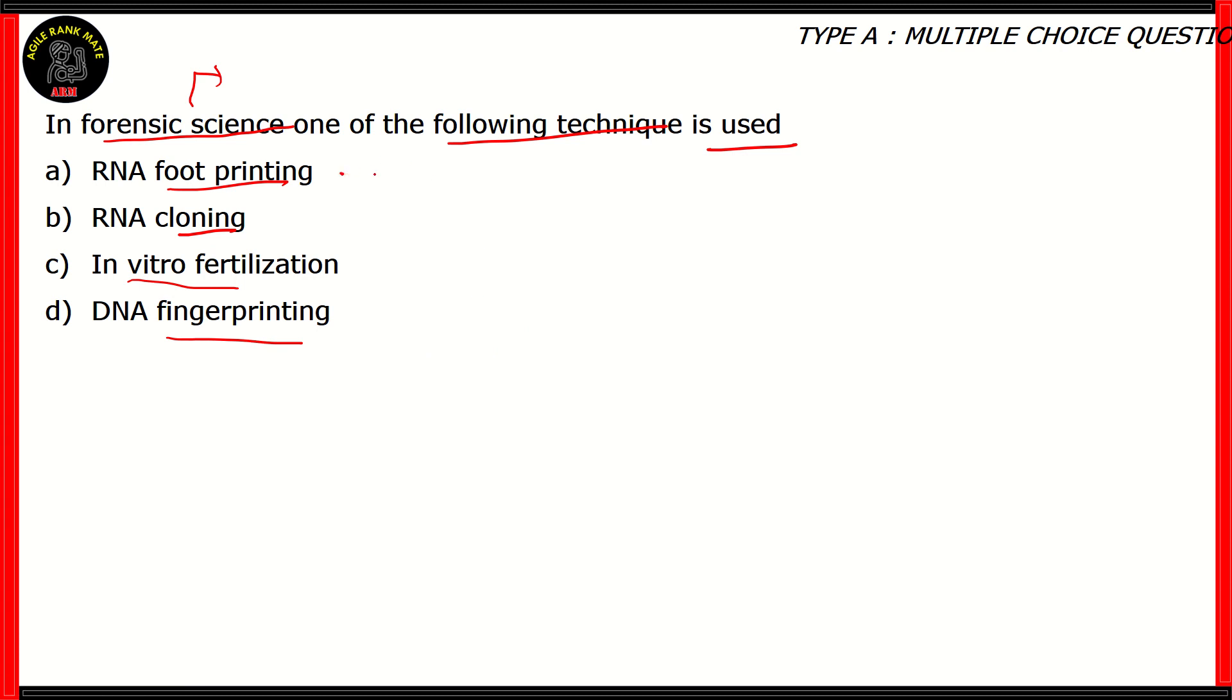RNA footprinting as a technique does not exist. RNA cloning is where you clone RNA for various purposes. It doesn't really help in forensic science because cloning RNA and then transcripting is basically used for protein production. So option B is incorrect.